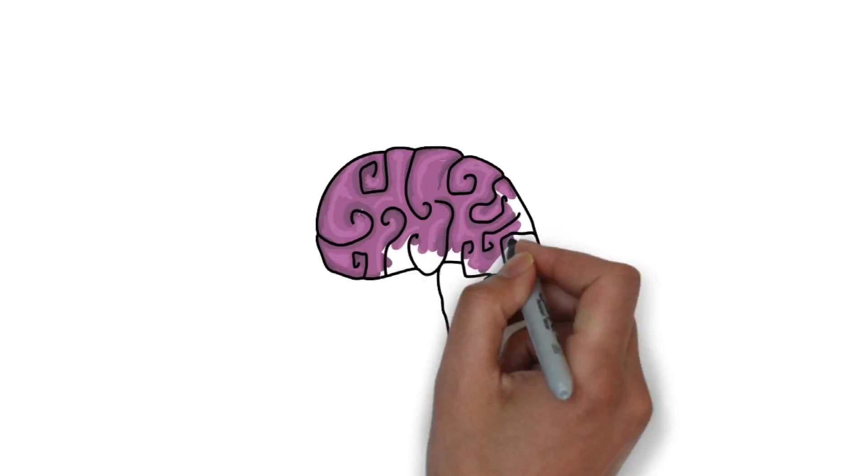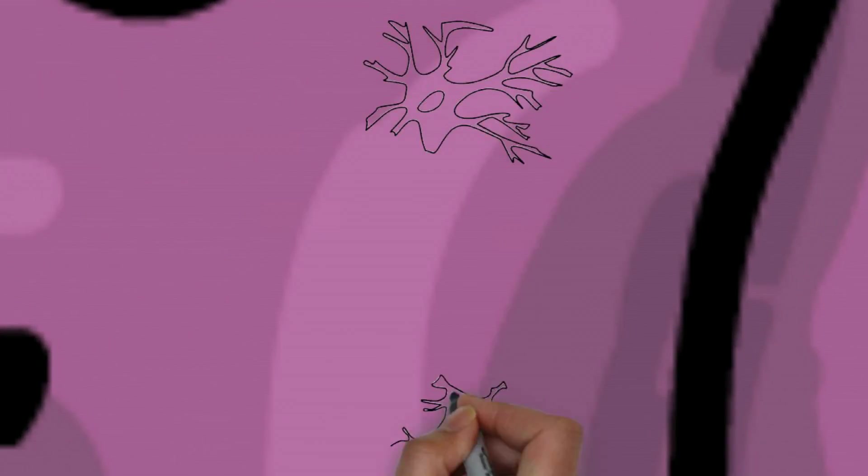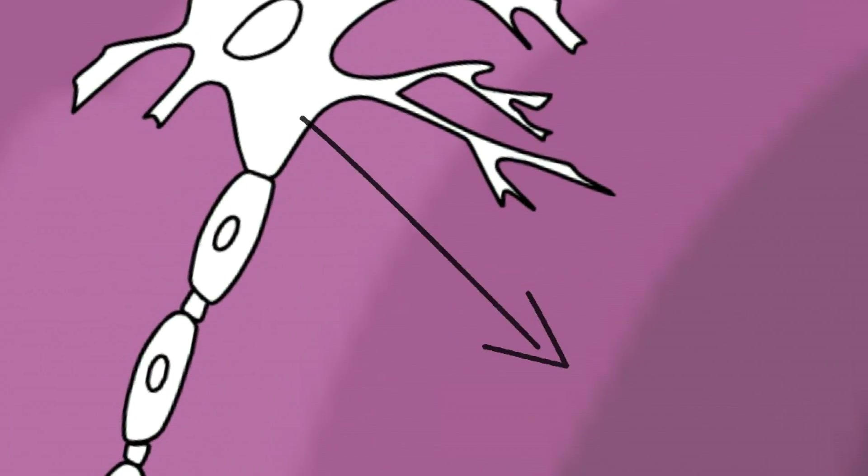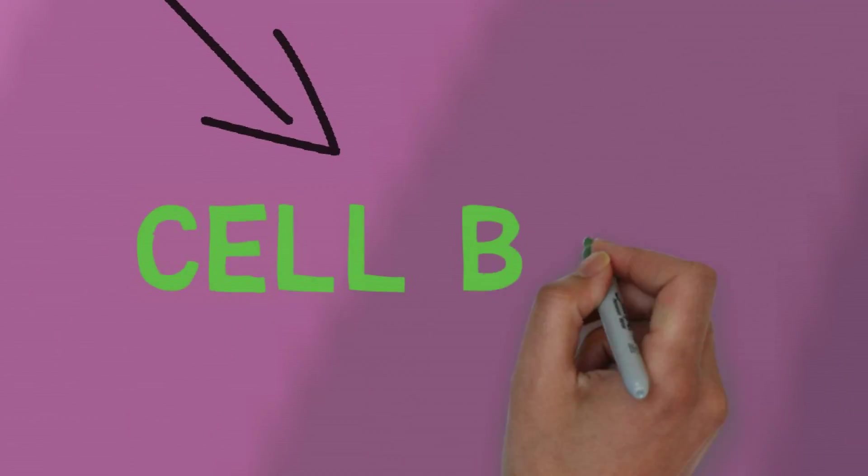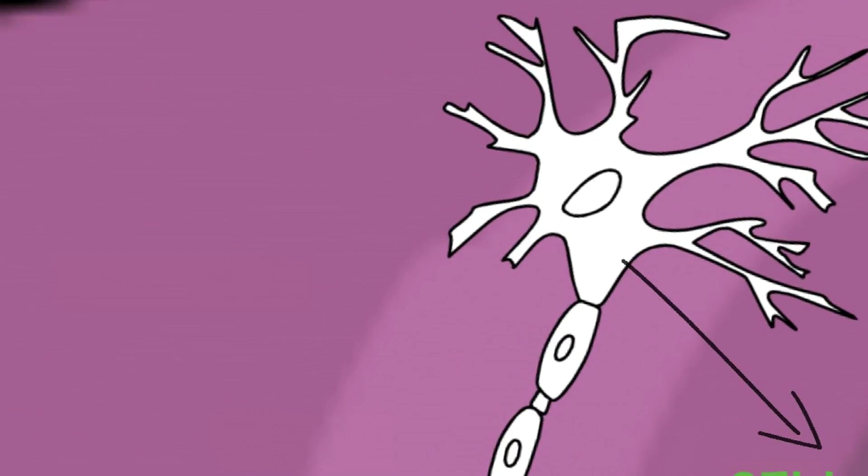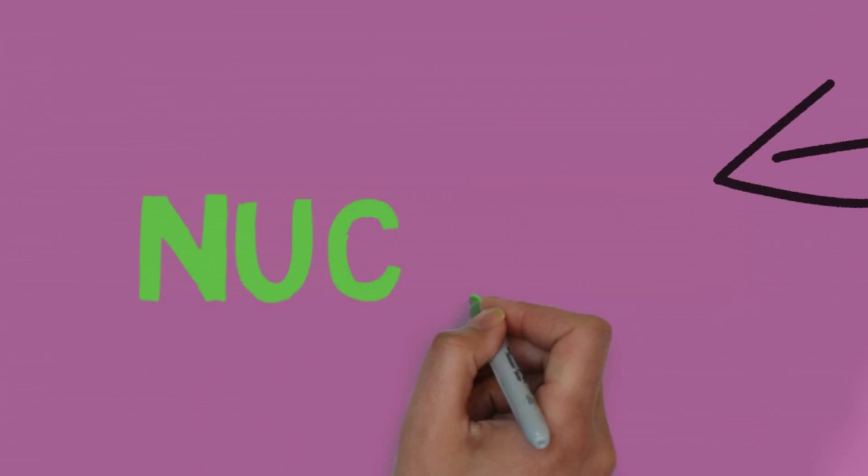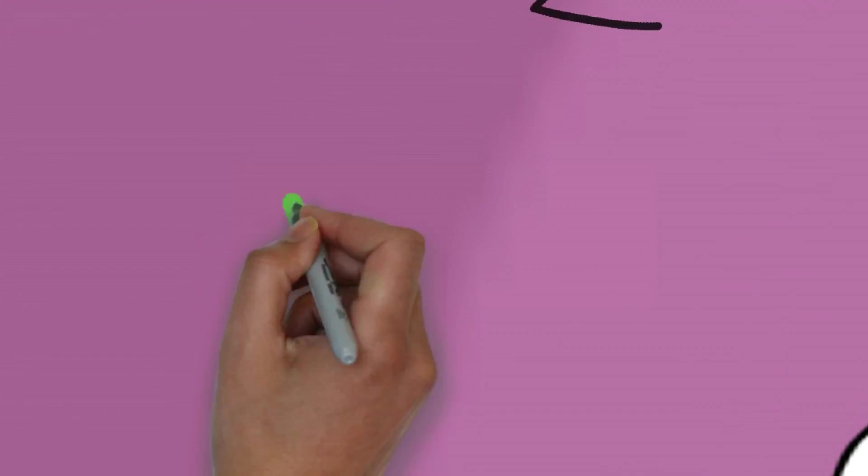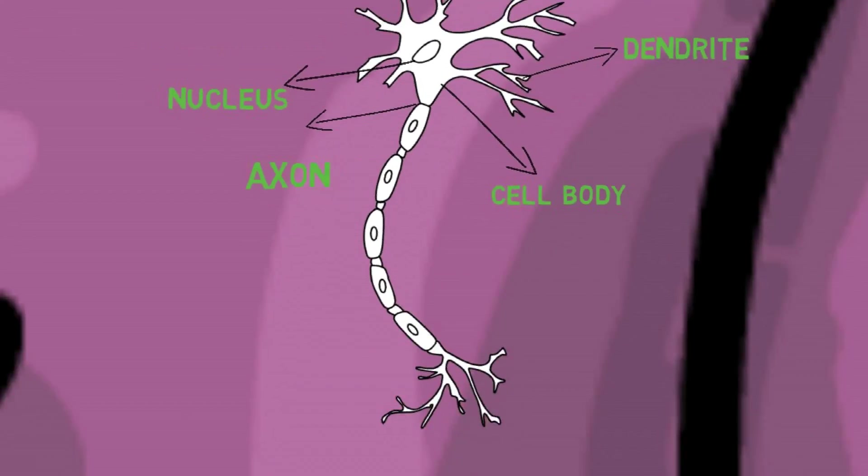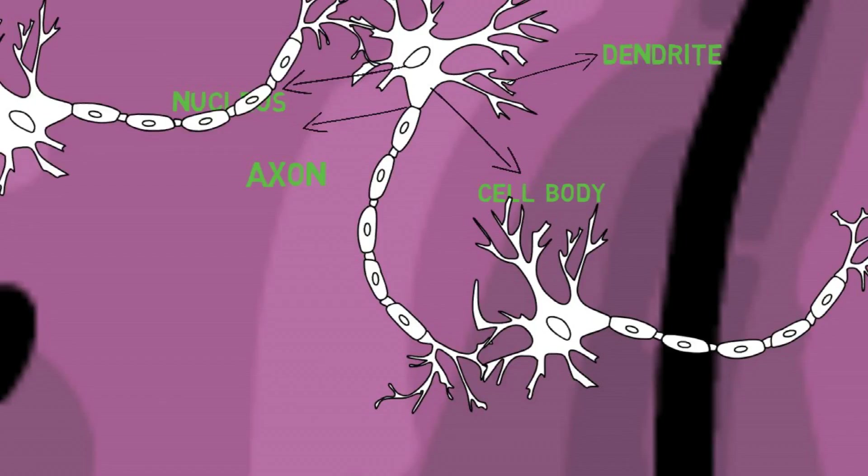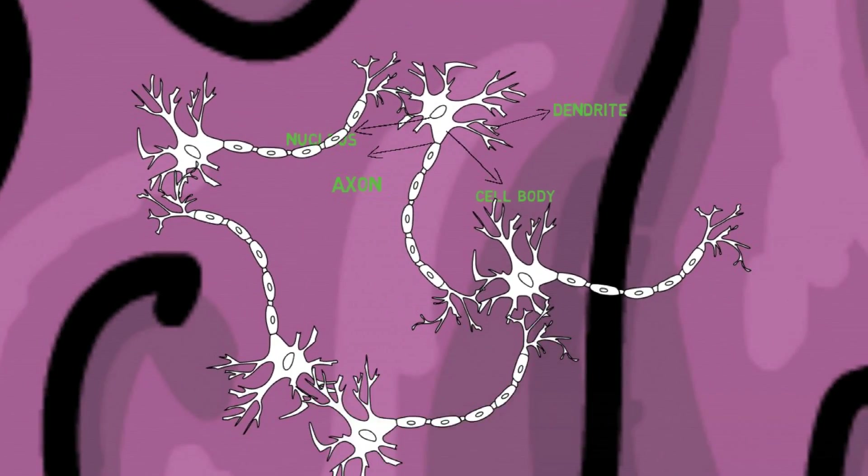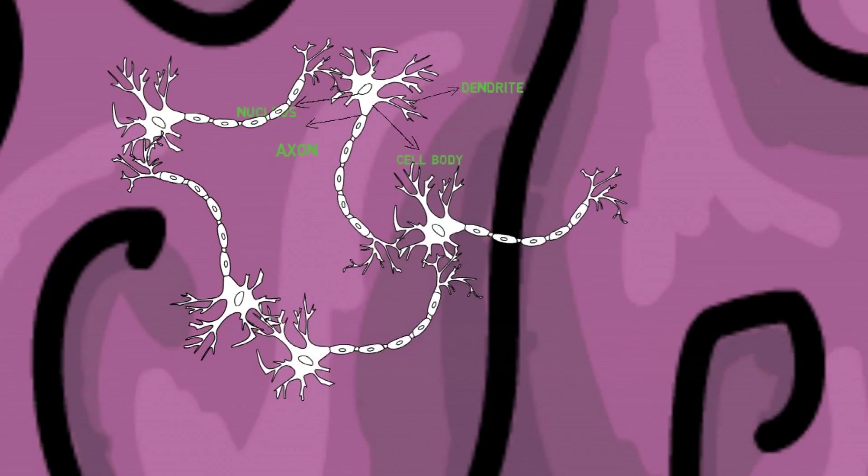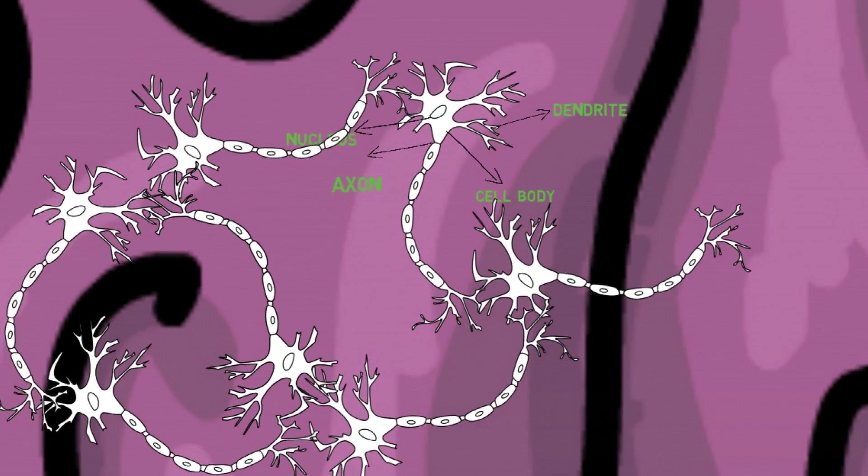There are about one hundred billion neurons, and one of them is this. This is a neuron. It consists of a cell body, a nucleus which performs all the vital functions of the neuron, dendrites which receive the input electrical signals, and axons which send the electrical signal away to another neuron. And there are so many of them, around one hundred billion neurons.